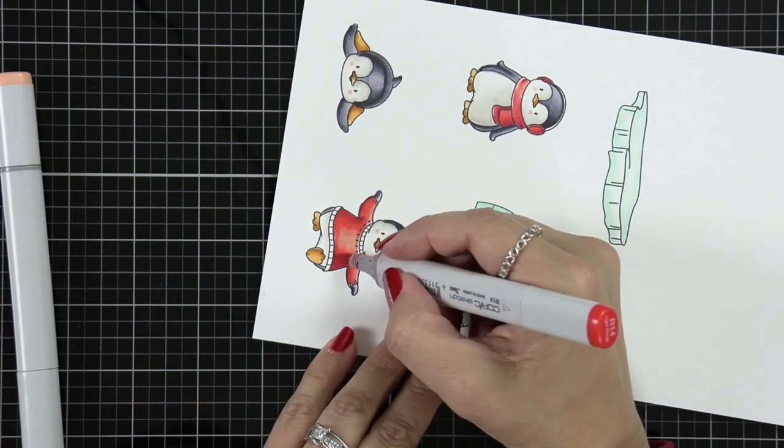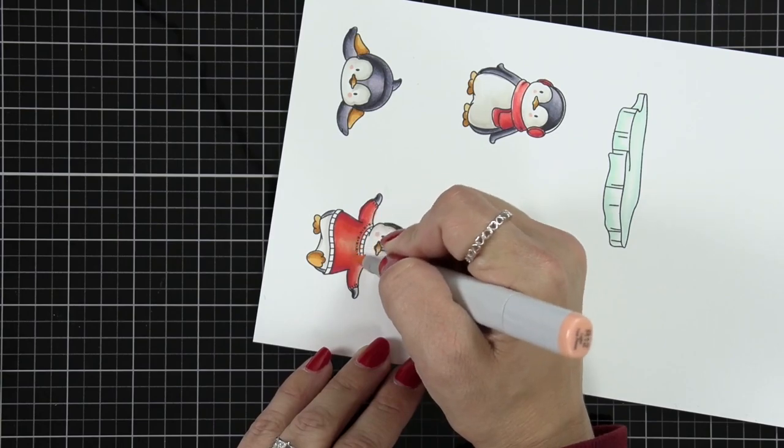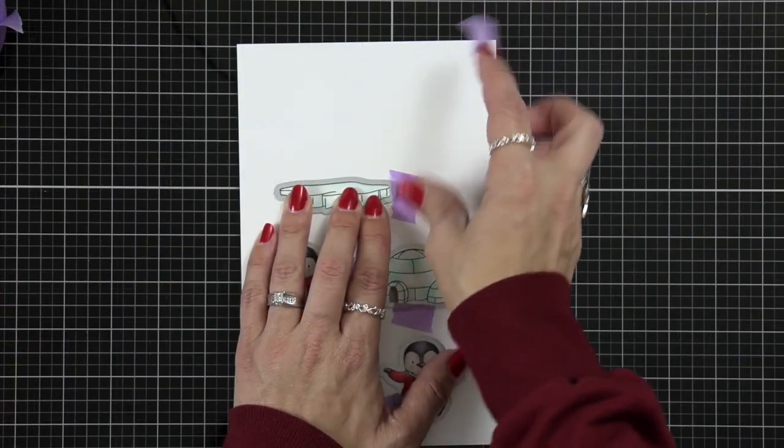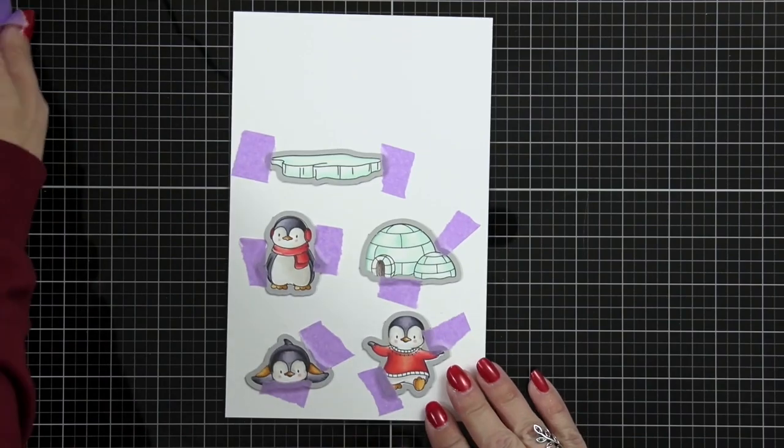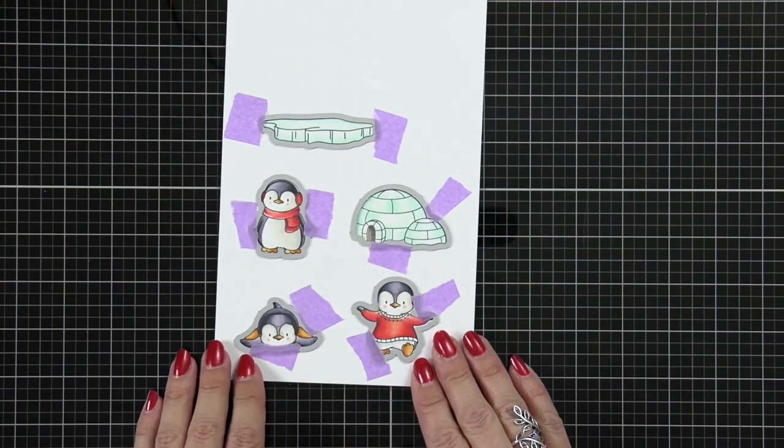Once everything is all colored in I am going to match up the coordinating dies to each of them hold them in place with a low tack tape and die cut those out so then I can move on to my background.